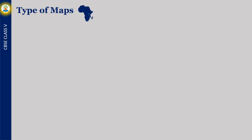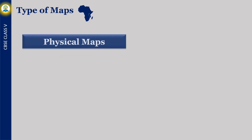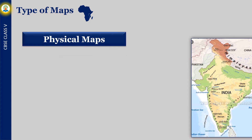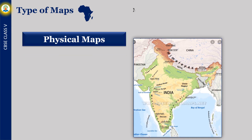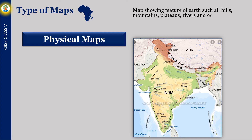There are three types of maps. Maps showing features of the Earth such as hills, mountains, plateaus, rivers and oceans are called physical maps.